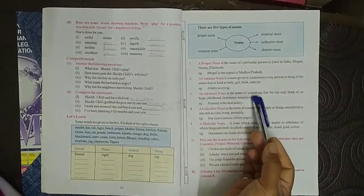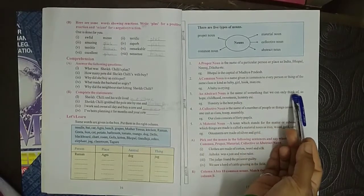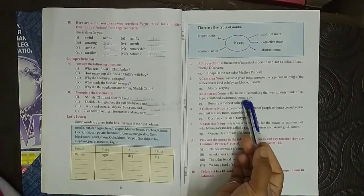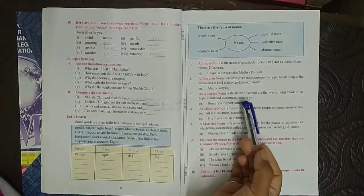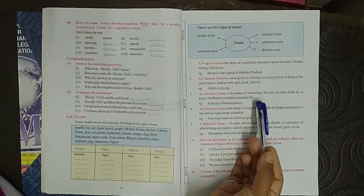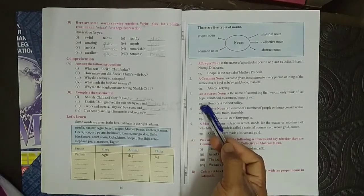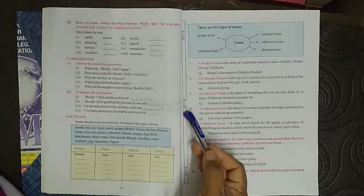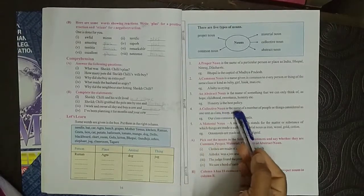Now third, an abstract noun is a name of something that we can only think of, as hope, childhood, sweetness, honesty, etc. Means the word which we can only think. Like example is: honesty is the best policy.